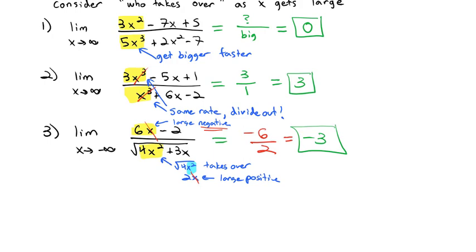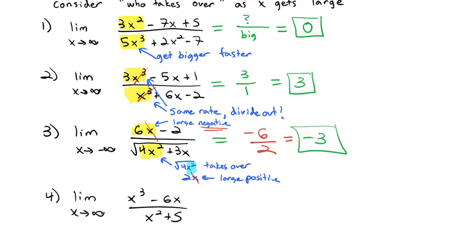This is the game we keep playing as we look at solving limits at infinity. We look at who's taking over, what's happening to x as it gets huge, whether positive or negative, and we have to be very careful with the signs. So if I want the limit as x goes to infinity of (x³ - 6x) over (x² + 5), again in the numerator the x³ is going to take over, and in the denominator the x² is going to take over.